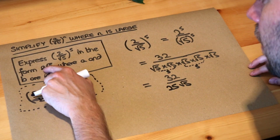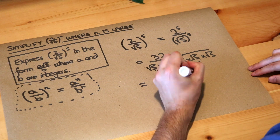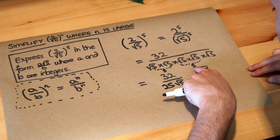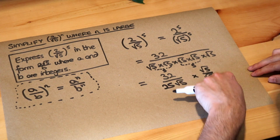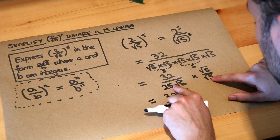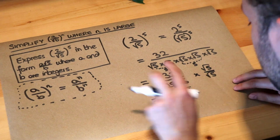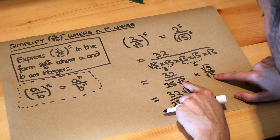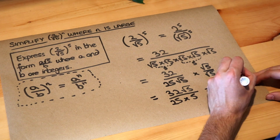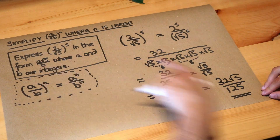Now it wants the answer in the form a root 5 over b, and the root 5 is at the top. We don't like surds in the denominator, so we need to rationalise by multiplying top and bottom by root 5. 32 times root 5 is 32 root 5. For the denominator, we multiply the non-surd parts: 25, and then root 5 times root 5 is 5, giving 25 times 5 which is 125. So the final answer is 32 root 5 over 125.